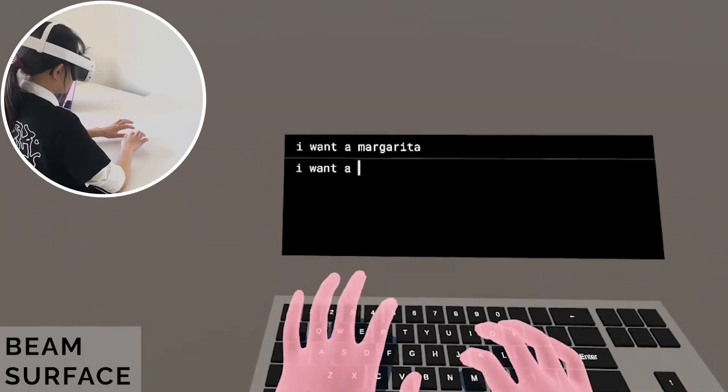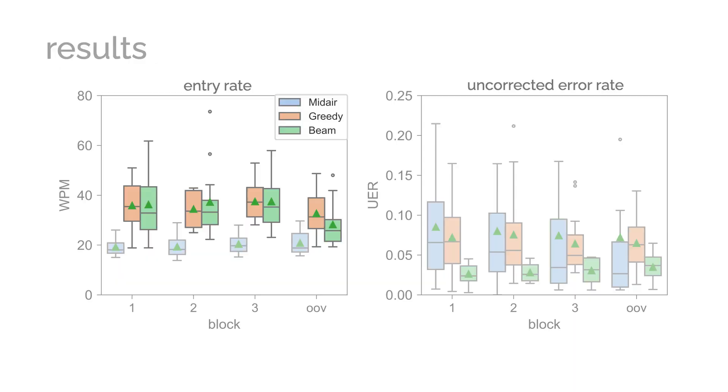Our evaluation showed that participants typed significantly faster in both on-surface conditions compared to mid-air typing. Using beam search decoding, participants also transcribed the text more accurately, entering text with a mean entry rate of 37 words per minute and an uncorrected error rate of 2.9 percent.